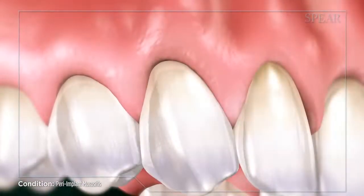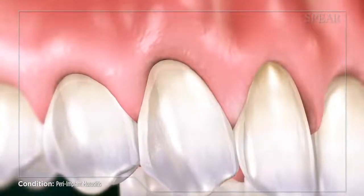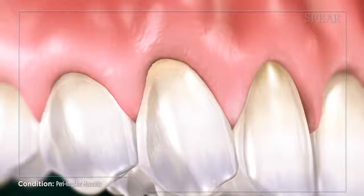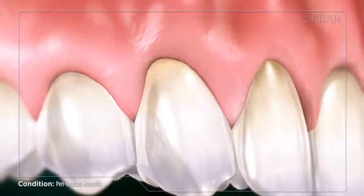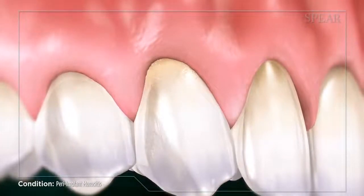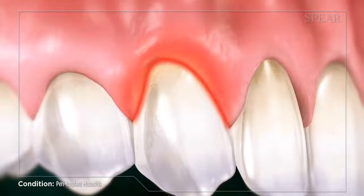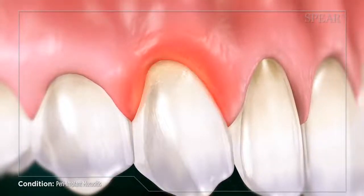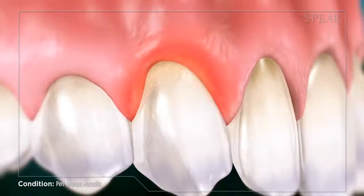The most common cause of peri-implant mucositis is plaque buildup at the implant site, which harbors toxin-emitting bacteria that result in irritation of the surrounding gum tissue. There are other possible causes that may apply depending on your situation.